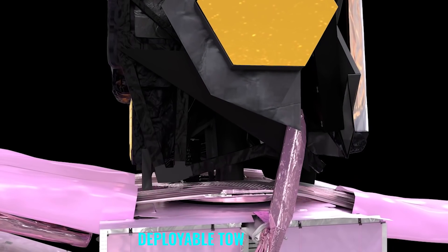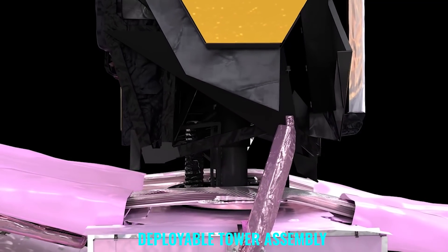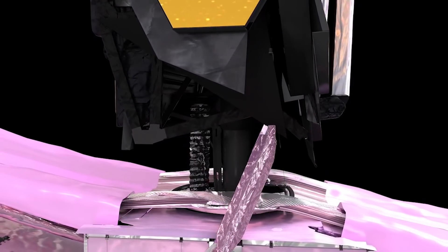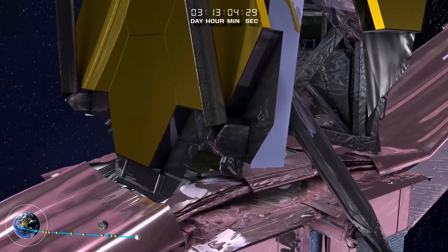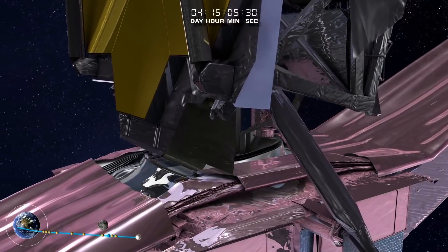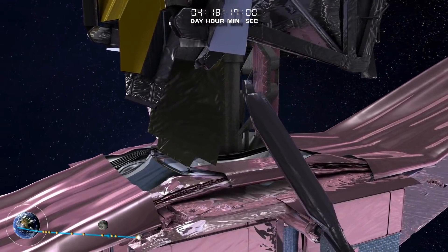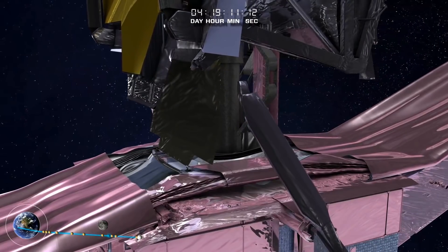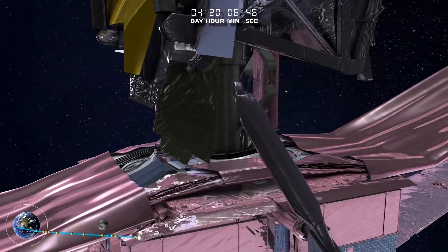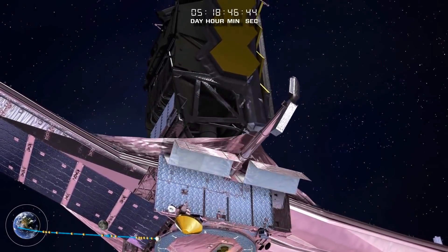Deployable tower assembly, DTA. The deployable tower assembly, DTA, is deployed. The tower extends 1.22 meters. This movement and distance provides needed separation between the spacecraft and telescope to allow for better thermal isolation and to allow room for the sunshield membranes to unfold.